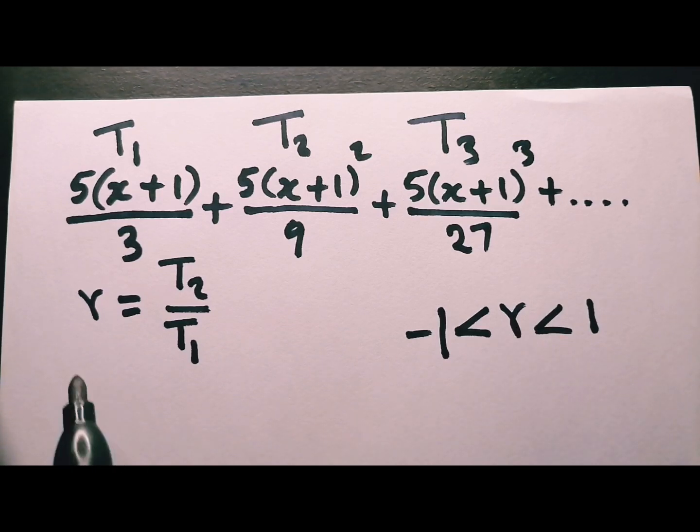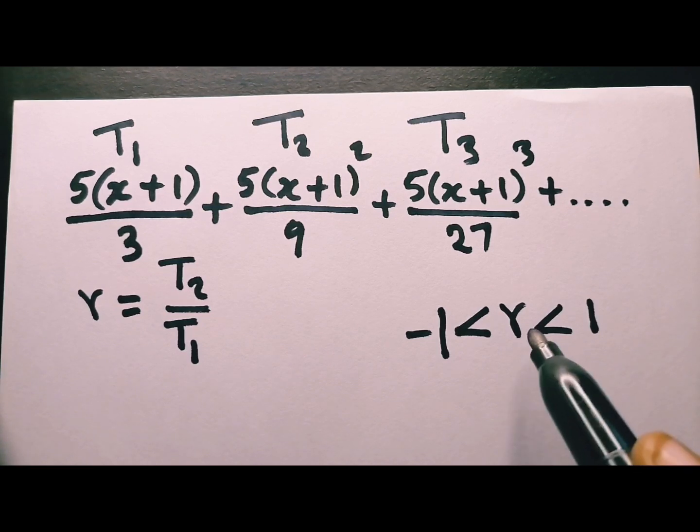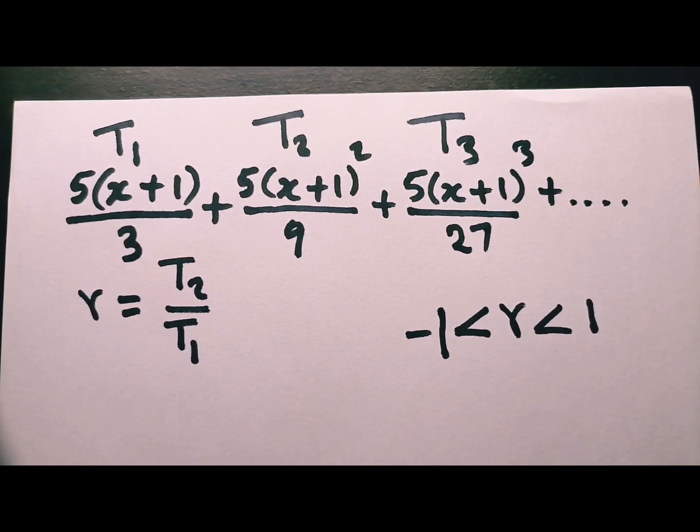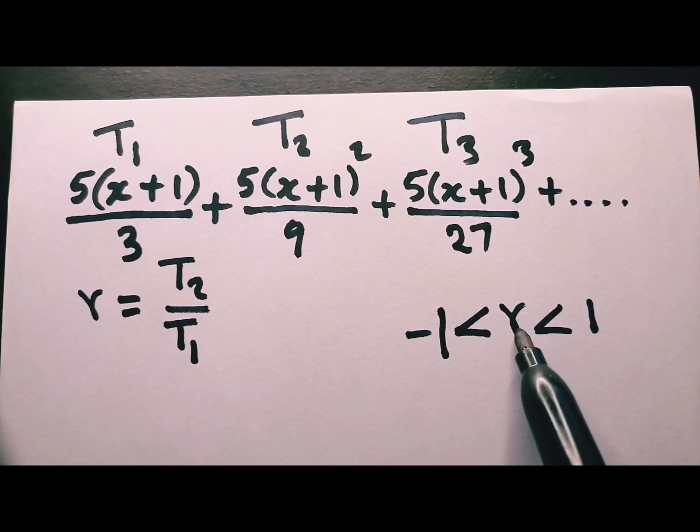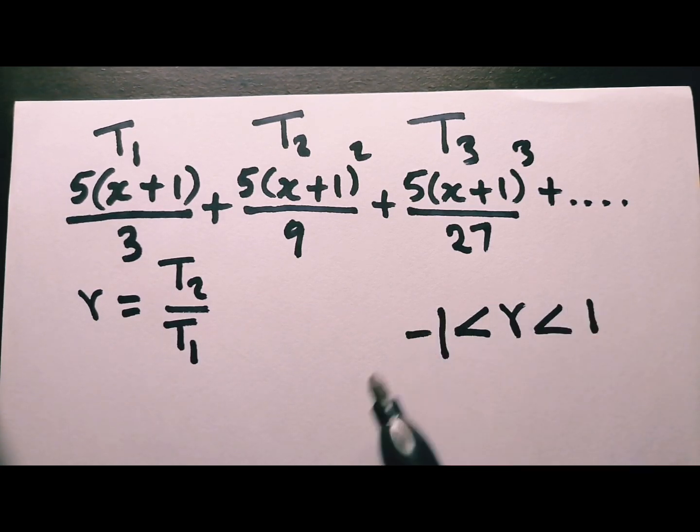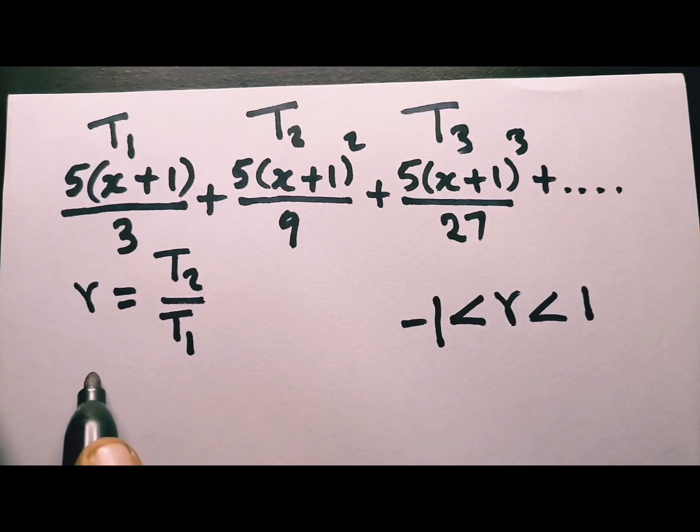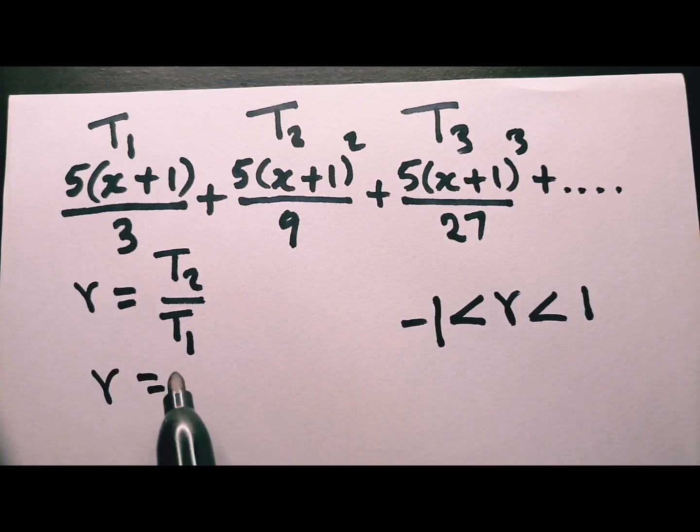This is the condition. You make sure you get your r, and this is going to help us to find the value of x as well. The first thing, you must know your r. Then you take r, you put it here, and then you solve for x. Now, what is our T₂?